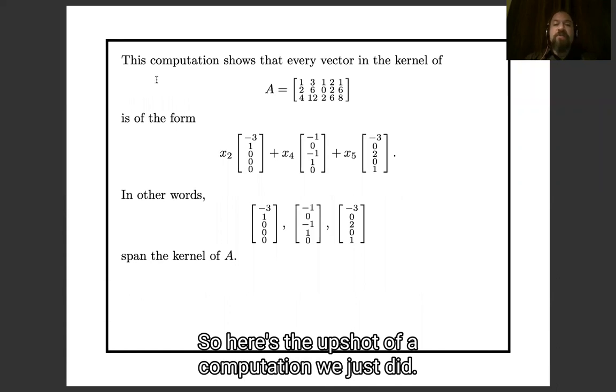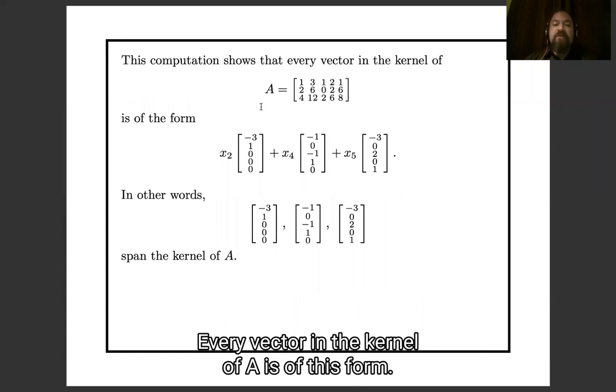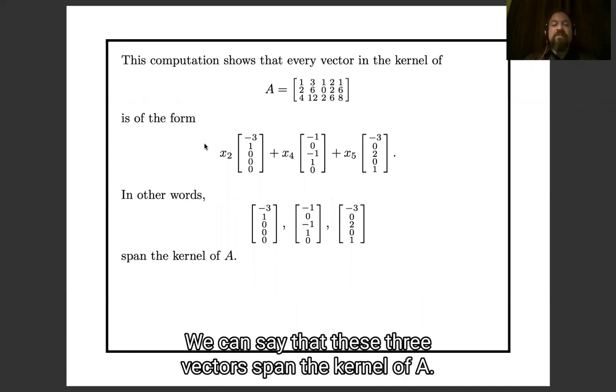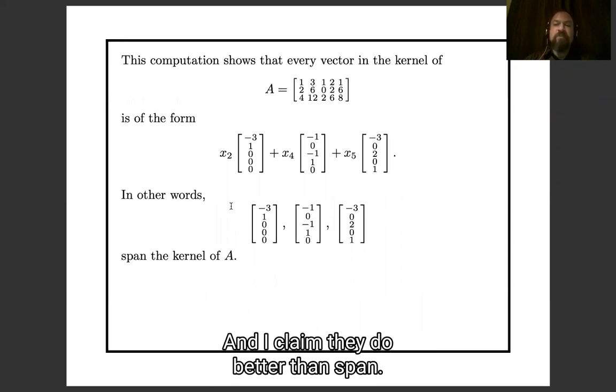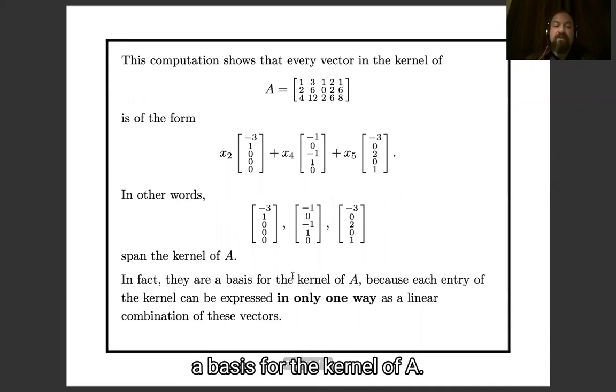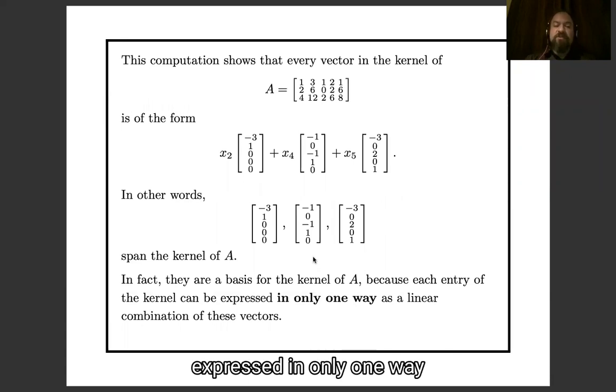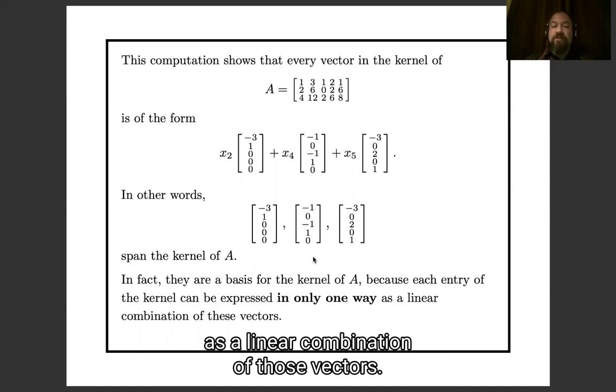So here's the upshot of the computation we just did. Every vector in the kernel of A is of this form. In other words, now that we have the word span, we can say that these three vectors span the kernel of A. And I claim they do better than span, I claim that they are actually a basis for the kernel of A. And that's true because each entry of the kernel can be expressed in only one way as a linear combination of those vectors.